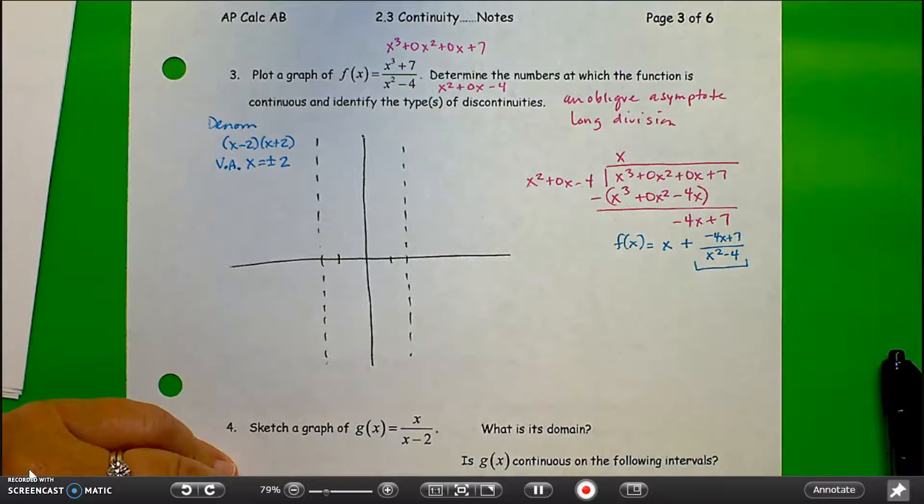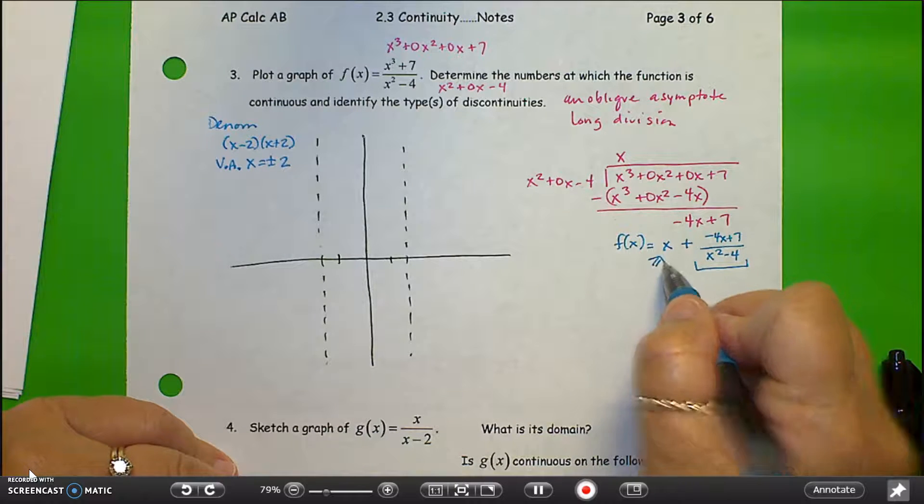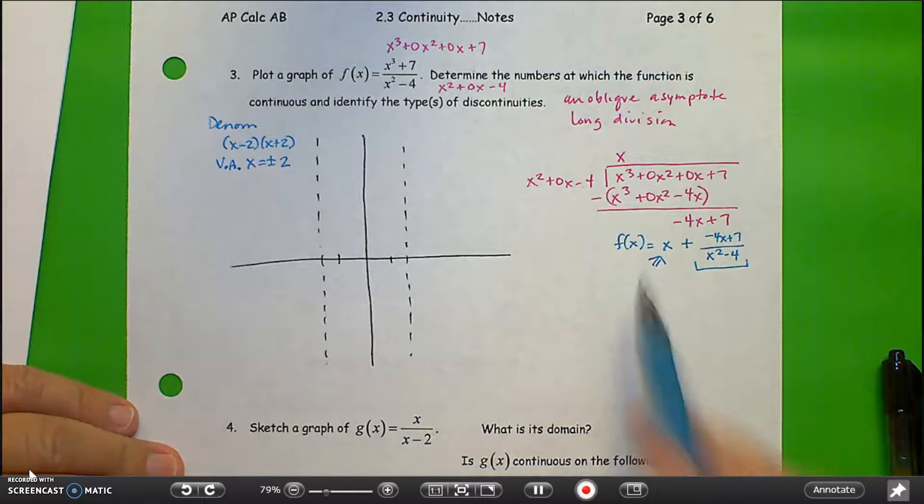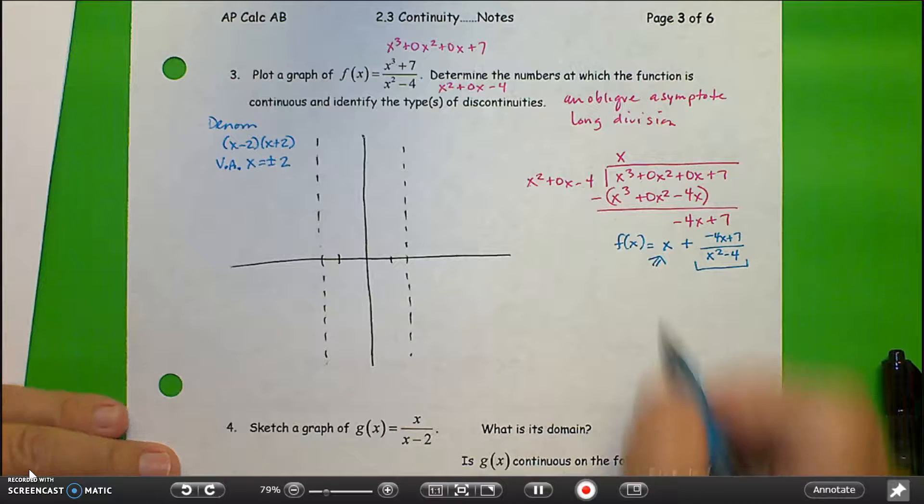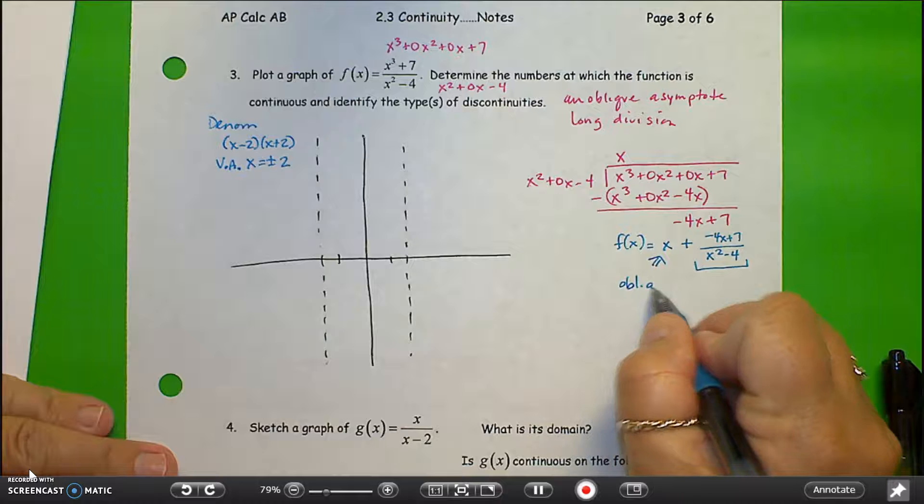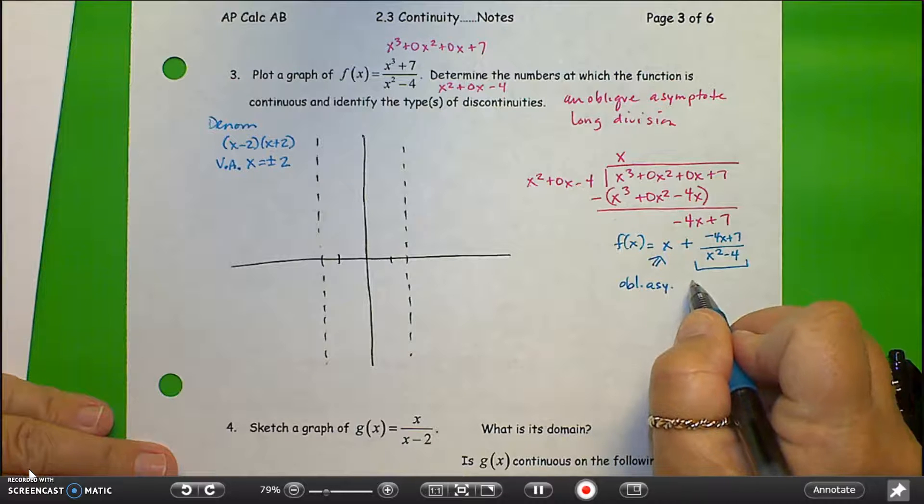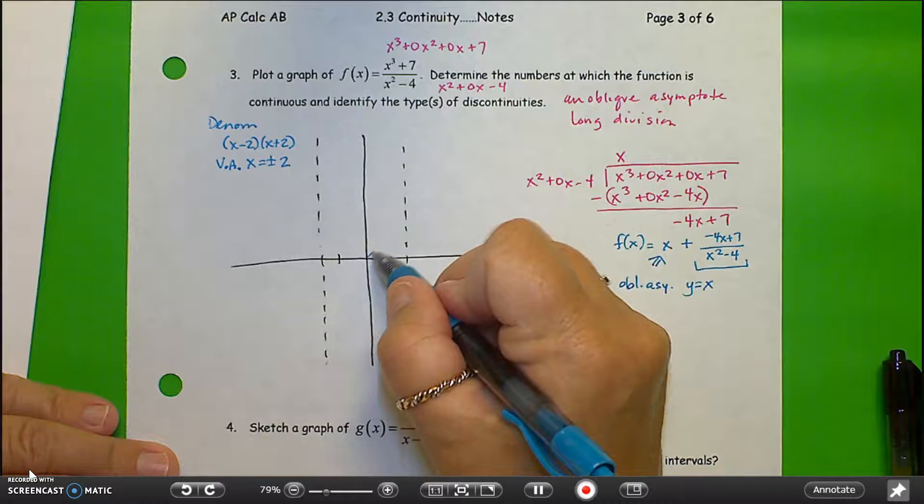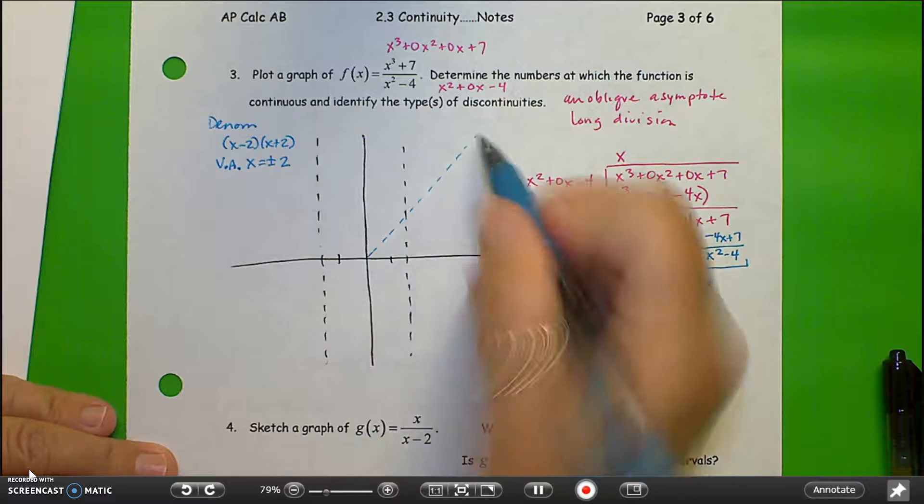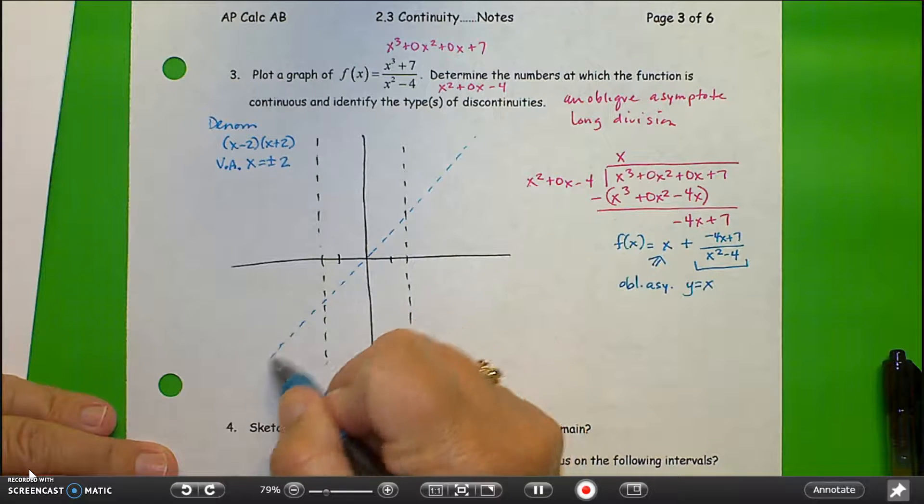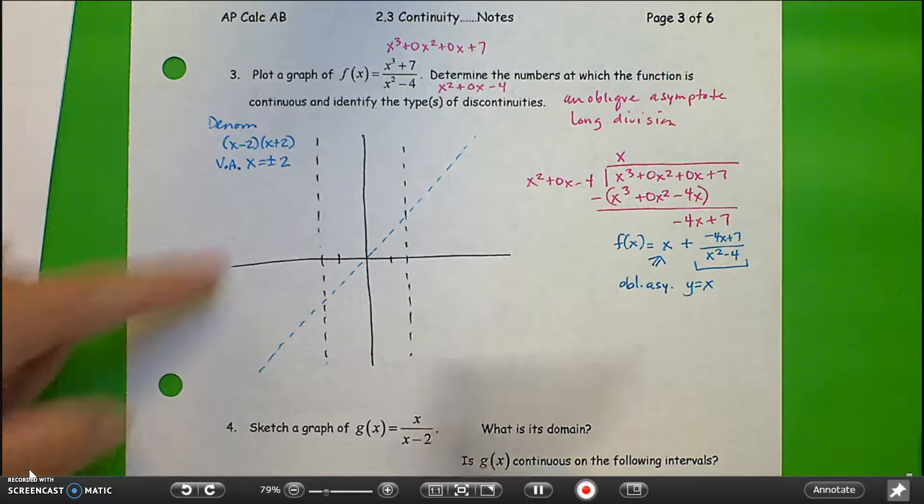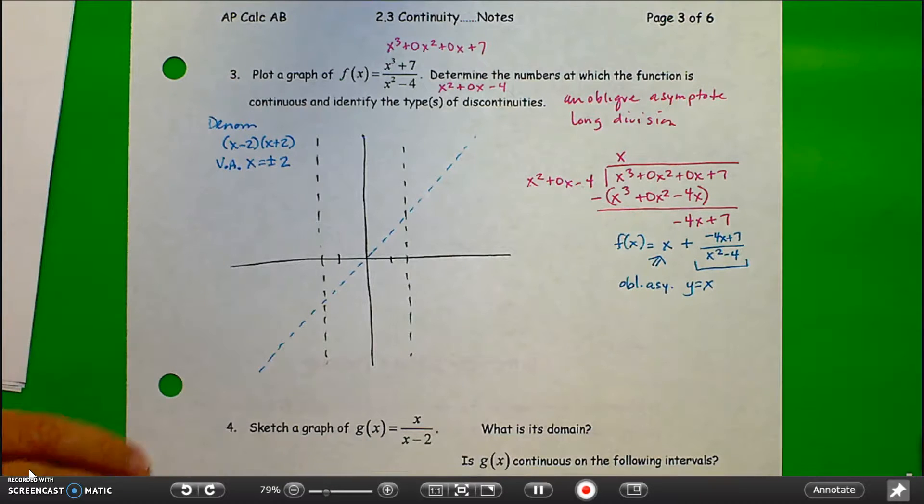So my function, after this long division, is x plus negative 4x plus 7 over x squared minus 4. The remainder, I don't really care about. This linear piece is the equation of my oblique asymptote. So the oblique asymptote is y equals x. Let's go ahead and sketch out that oblique asymptote there.